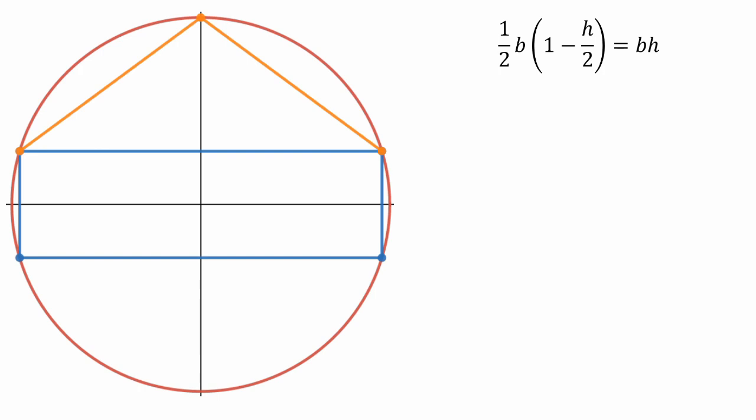This is going to give us one-half b times the quantity one minus h over 2 is equal to b times h. As you can see, the b's will cancel out from both sides of the equation, and we're going to be left with one-half times the quantity one minus h over 2 is equal to h. We'll then distribute the one-half, and we'll have one-half minus h over 4 is equal to h.